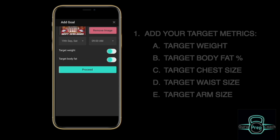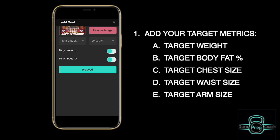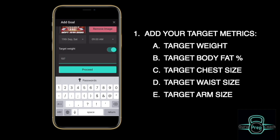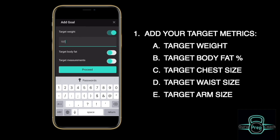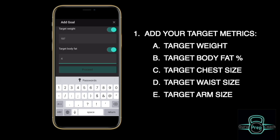Click the Target Weight button to specify a target weight for your goal. You can also add a Target Body Fat goal by clicking the Target Body Fat button and entering your desired body fat percentage.